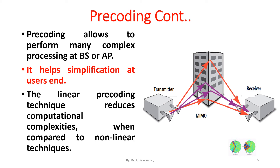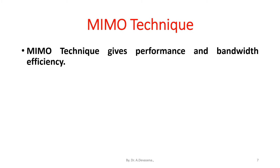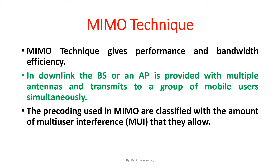The linear pre-coding technique reduces computational complexities when compared to non-linear techniques, and MIMO technique gives improved performance and bandwidth efficiency. In the downlink, the base station or access point is provided with multiple antennas and transmits to a group of mobile users simultaneously. Pre-coding used in MIMO is classified by the amount of multi-user interference that it allows.